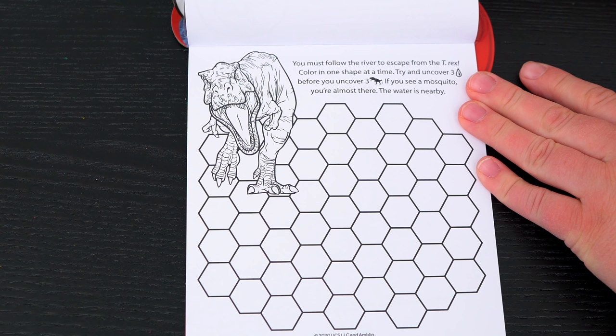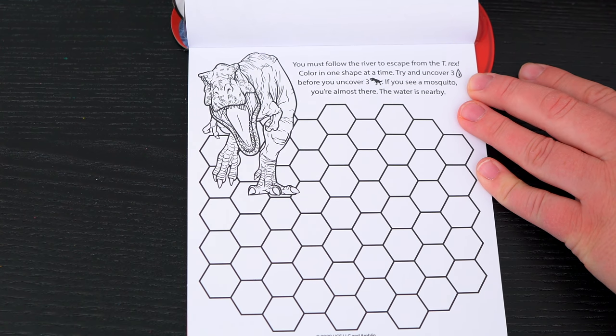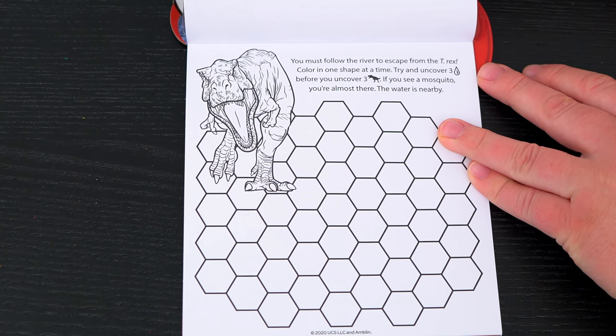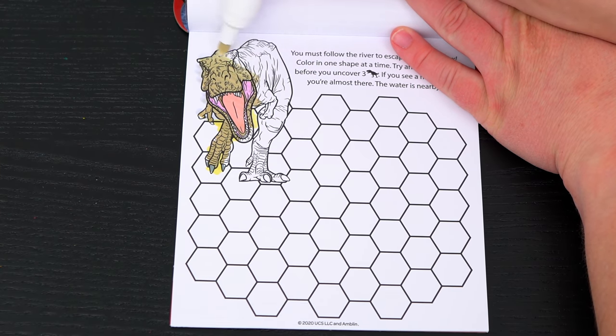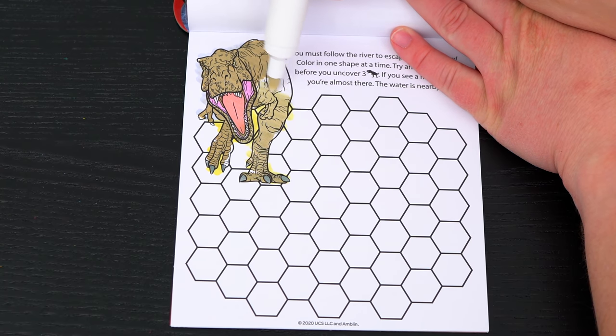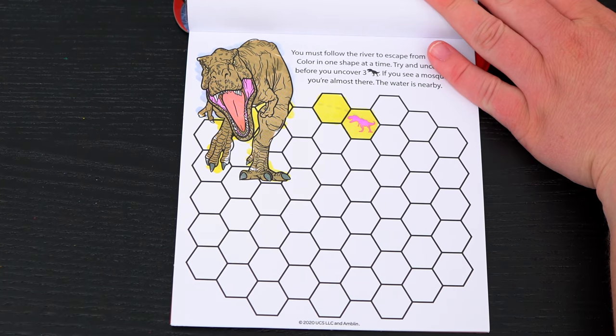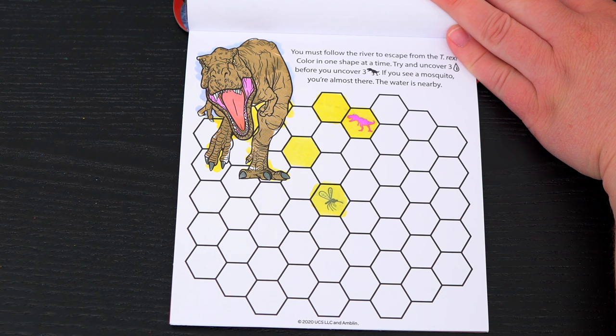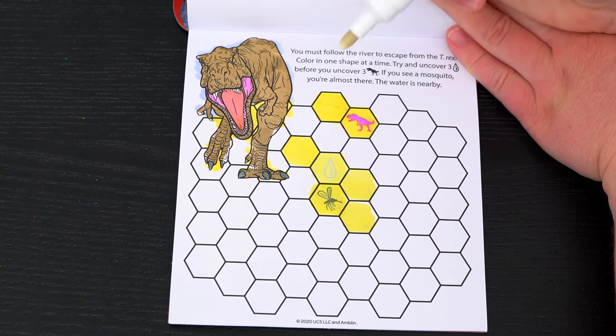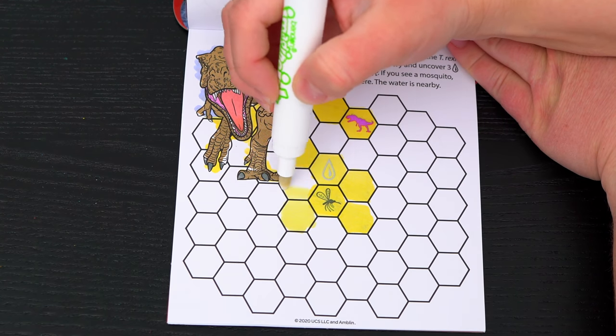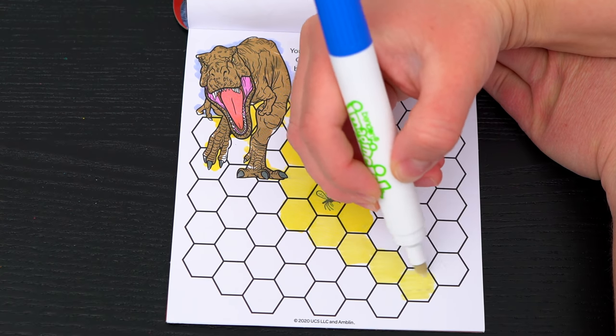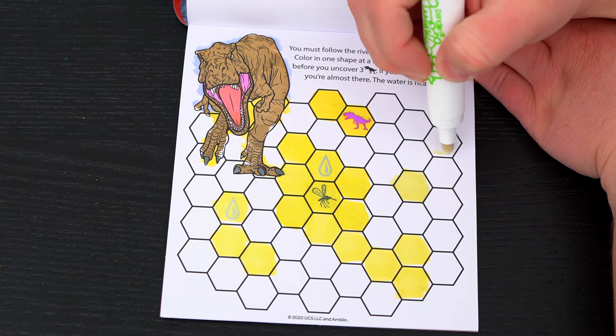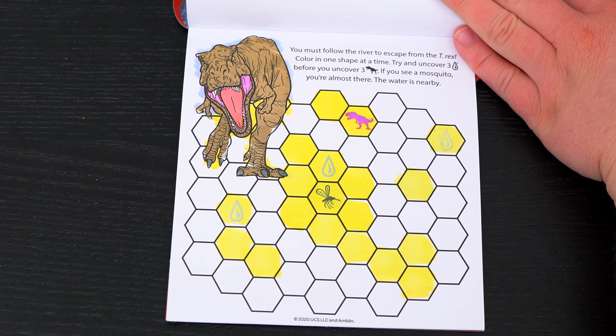You must follow the river to escape from the T-Rex! Color in one shape at a time! Try and uncover three water drops before you uncover three T-Rexes! If you see a mosquito, you're almost there! The water is nearby! Okay, let's play! Oh no, we got a dinosaur! We need to be getting the raindrops! Ooh, a mosquito! There must be water nearby! Yeah, there it is! Okay, we have one drop of water! Ooh, another drop of water! We just need one more! Alright, we made it to the river before the T-Rex got us! Yay!